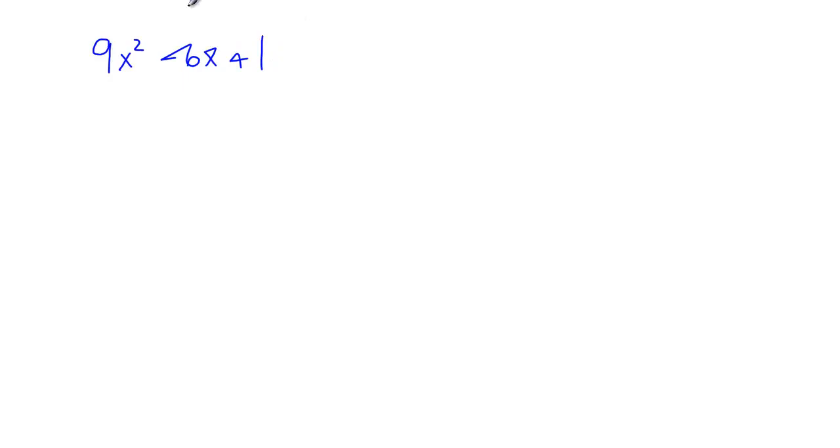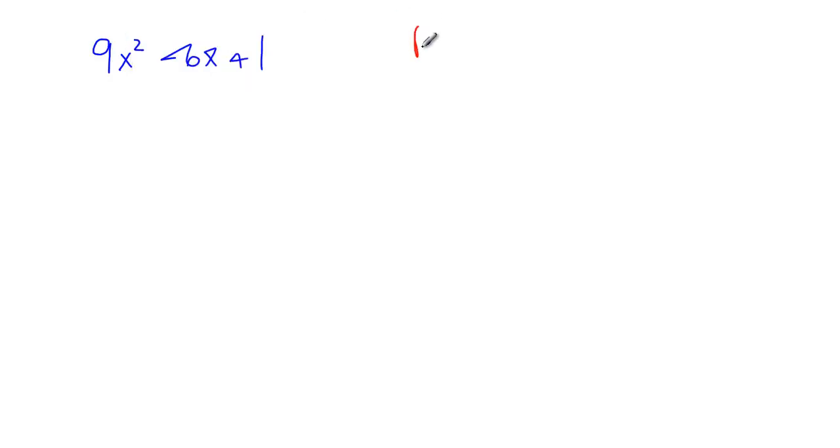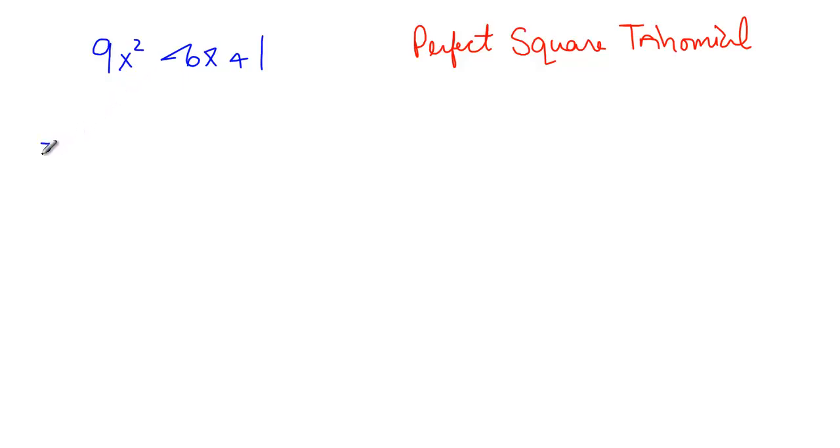The question we've been working with is 9x squared minus 6x plus 1. I'm going to show you something interesting about it because this is a special kind of polynomial actually. And it is something called a perfect square trinomial. Why is it a perfect square trinomial? Because when we factored it, our answer is something squared each time. If we know that, if we can see that, we can save ourselves time.